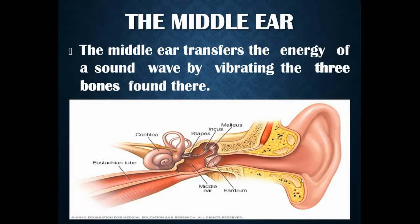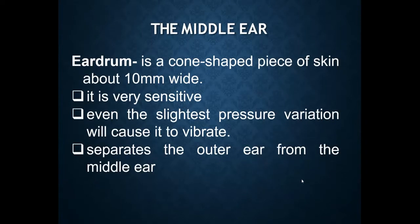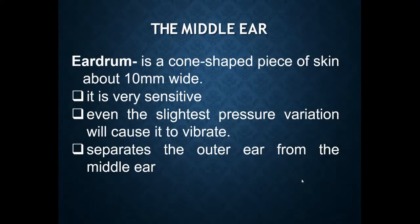The middle ear transfers the energy of sound waves into vibrations and then passes them on to the bones present in the ear. The middle ear contains the eardrum, which is a cone-shaped piece of skin about 10 millimeters wide — a very sensitive area. Even a slight increase in pressure outside will cause vibration inside the eardrum. The eardrum separates the outer ear from the middle ear.